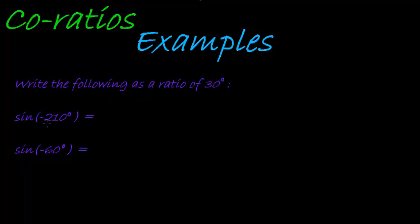How can we write sine of negative 210 using either negative 90, negative 180, or negative 360? Hopefully you see that this negative 210, if I take 30 degrees, I can say negative 180 minus 30 degrees.